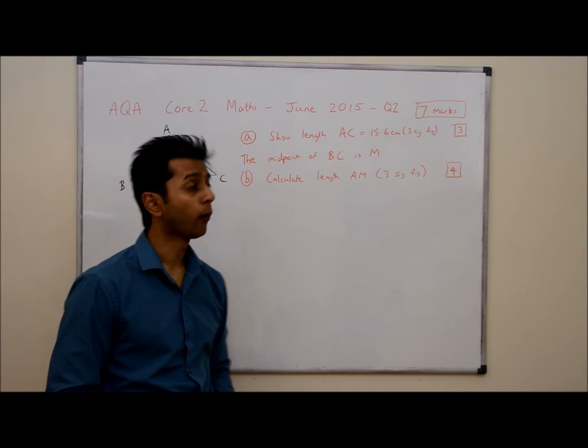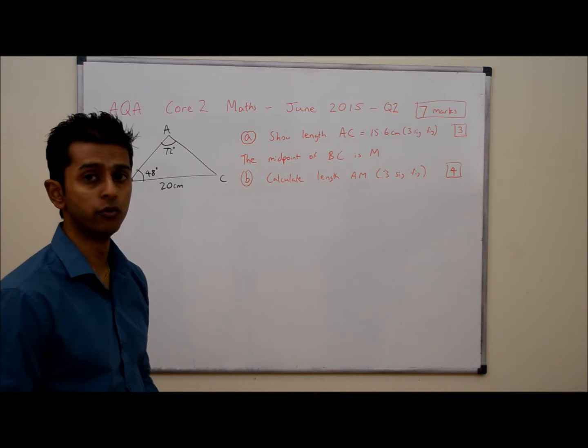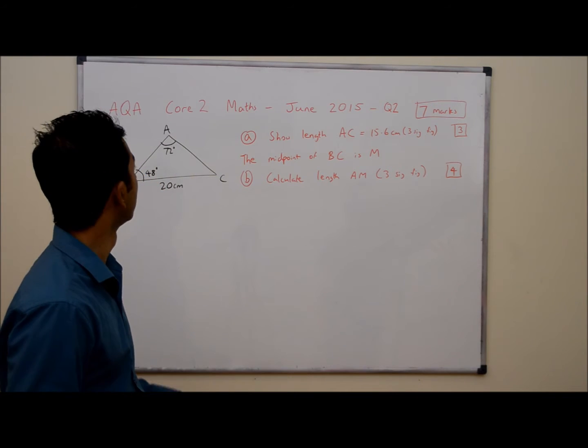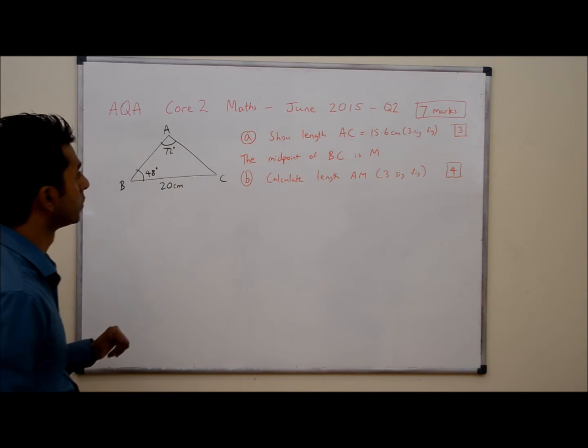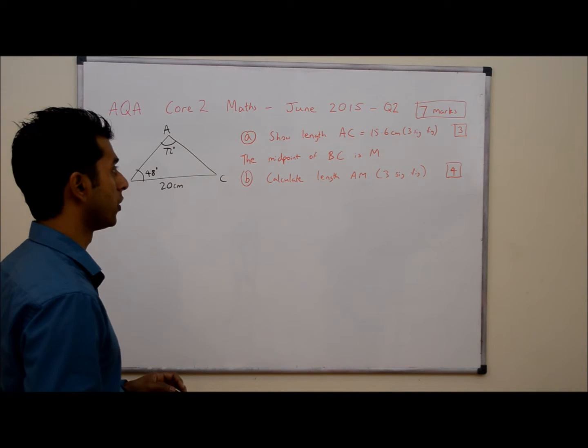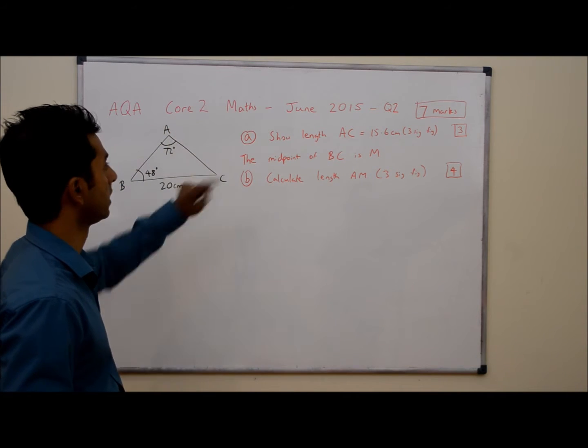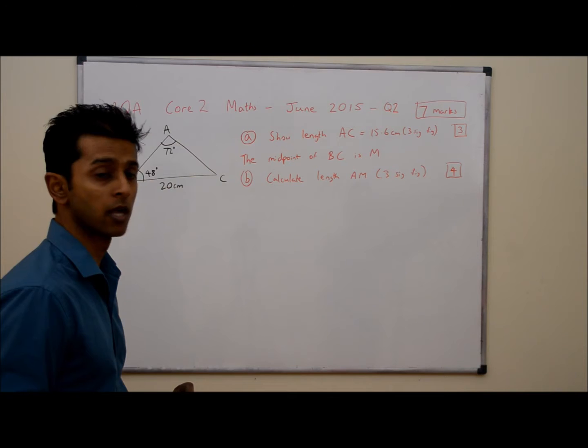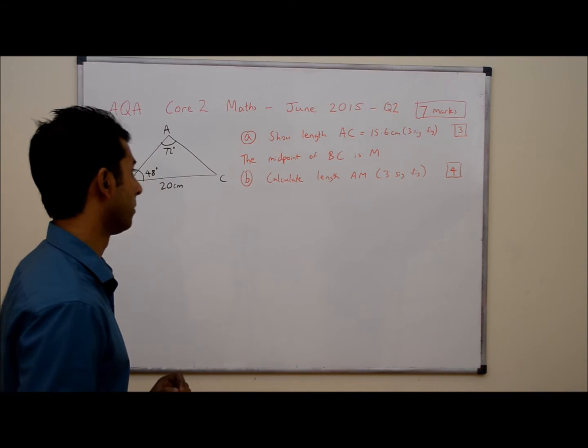Hello, in this video we're going to be looking at question 2 of the Core 2 June 2015 paper. This diagram is given to us and the first part of the question says show that the length of AC is 15.6 centimeters to three significant figures for three marks.